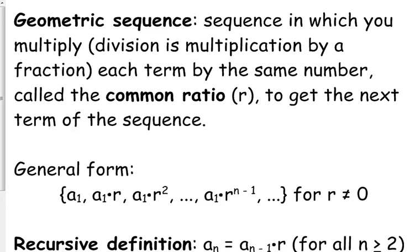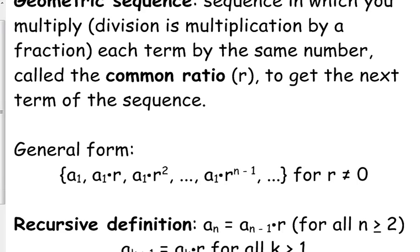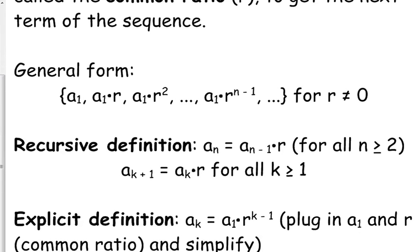So here's our general form, just like yesterday. You start with your first term, a sub 1. You multiply by the common ratio, you get the second term, and then we multiply by the common ratio. So r times r is r squared. That's what the terms of your sequence look like. Obviously, that common ratio can't be 0. It also can't be 1, because if it's 1, then you don't really have a sequence - you've just got the same number over and over again.